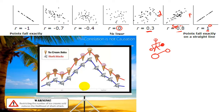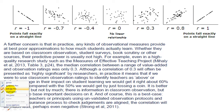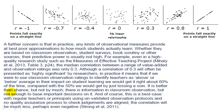Bearing all this in mind, let's go to the report. Here's a nice extract I found very interesting. 'The further concern is that in practice, any kinds of observational measures provide, at best, poor approximation as to how much students actually learn — whether they are based on classroom observations, student surveys, book scrutiny, or other sources. Their predictive power is usually not high. For example, even in high-quality research studies such as the Measures of Effective Teaching Project...'